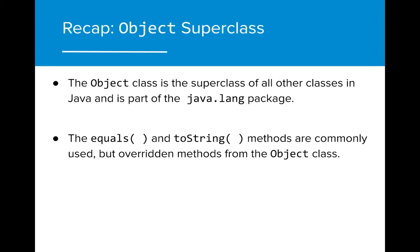As a recap, remember that the object class is the superclass of all other classes in Java and is part of the java.lang package. While the object class has about 11 different methods, the two most common methods that we see are the equals and toString methods, both of which are often overridden by subclasses.